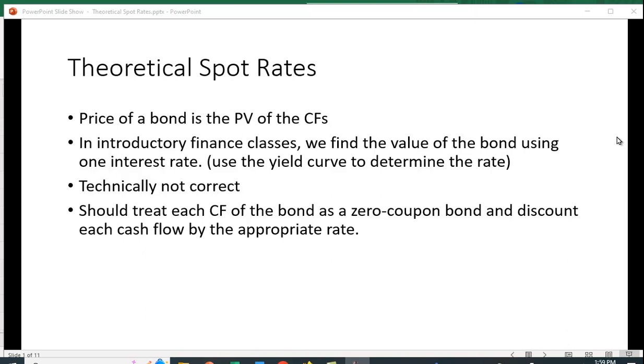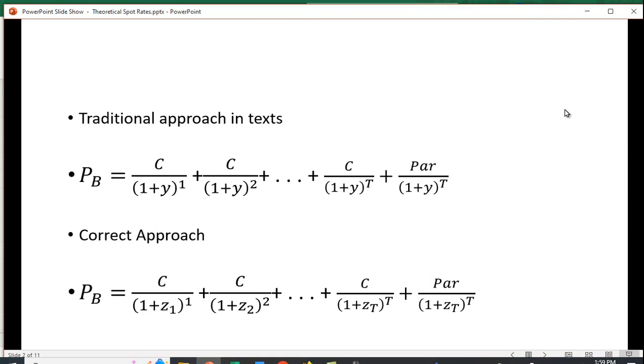What we should do is treat each of the cash flows of the bond as a zero coupon bond and discount each cash flow by the appropriate interest rate. The correct approach is to use a different interest rate for each period.